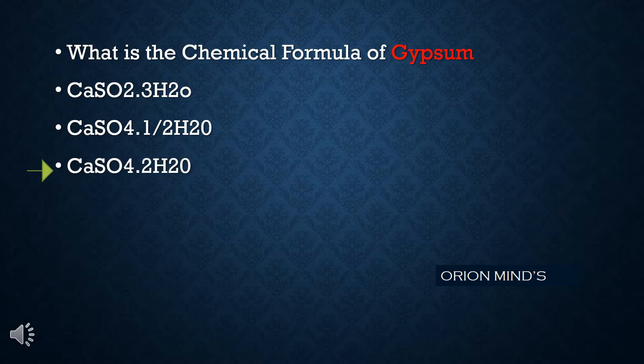What is the chemical formula of gypsum? The answer is CaSO4·2H2O.